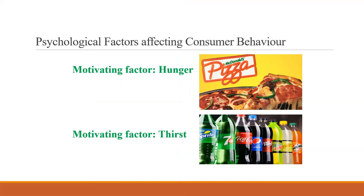Let's see a few examples. Here we can see an ad of pizza — these are psychological factors affecting consumer behavior. Pizza is a food, so what could be the motivating factor here is hunger. People will feel hungry and go for satisfying their need, so they can go for pizza — the motivating factor here is hunger. The second figure is about cold drinks, different varieties of cold drinks. The motivating factor here is thirst — when a person is thirsty, they can go for these brands.